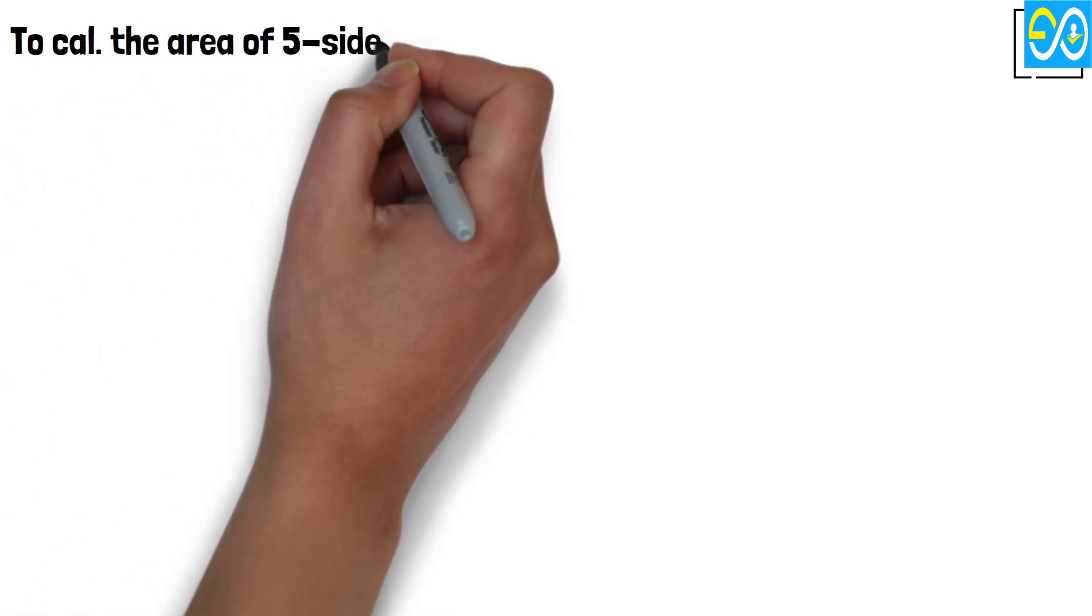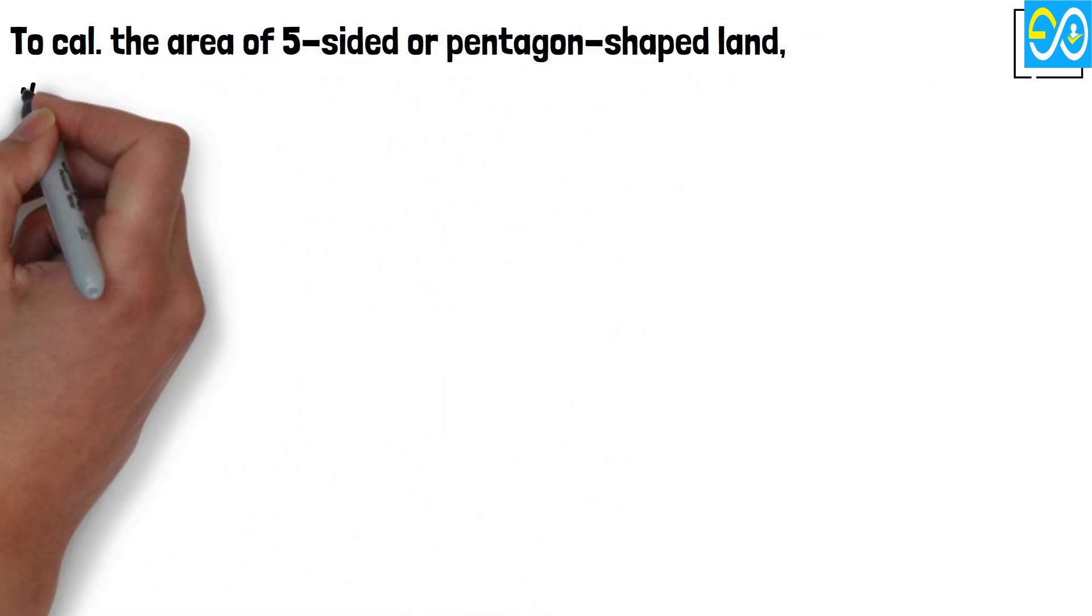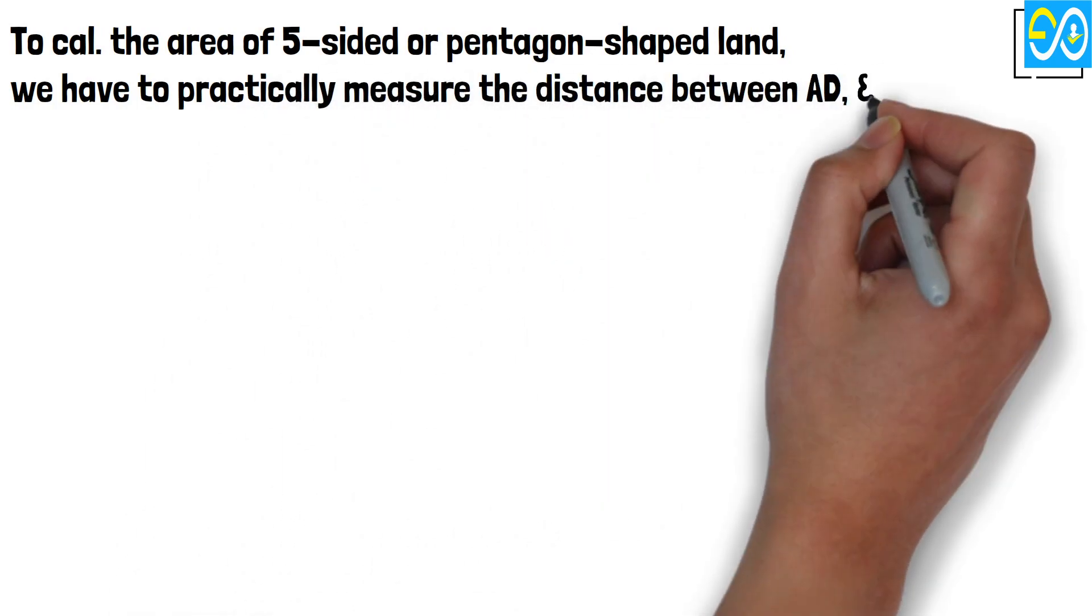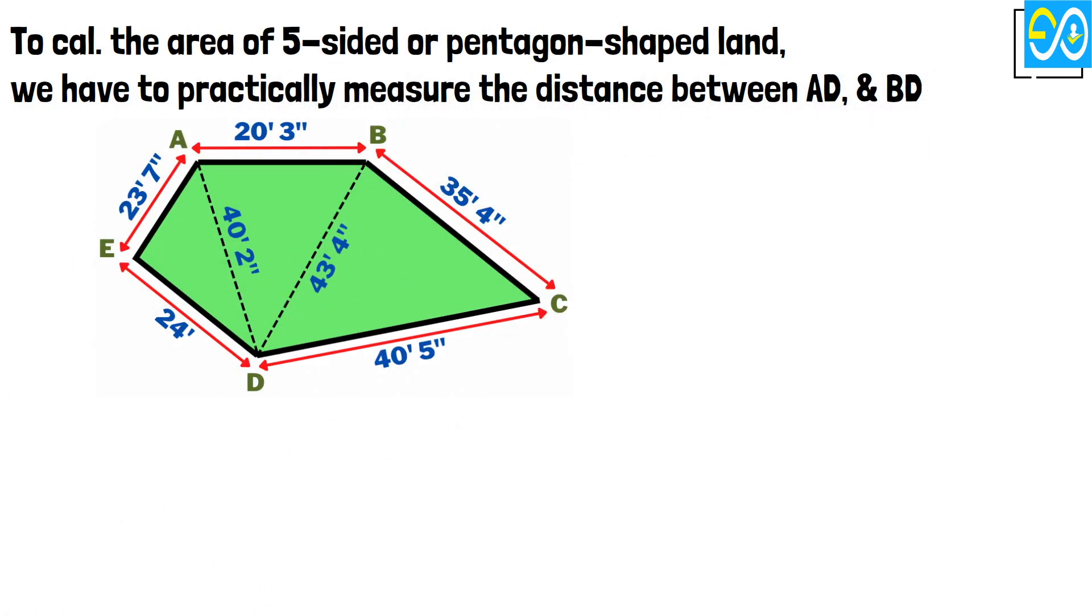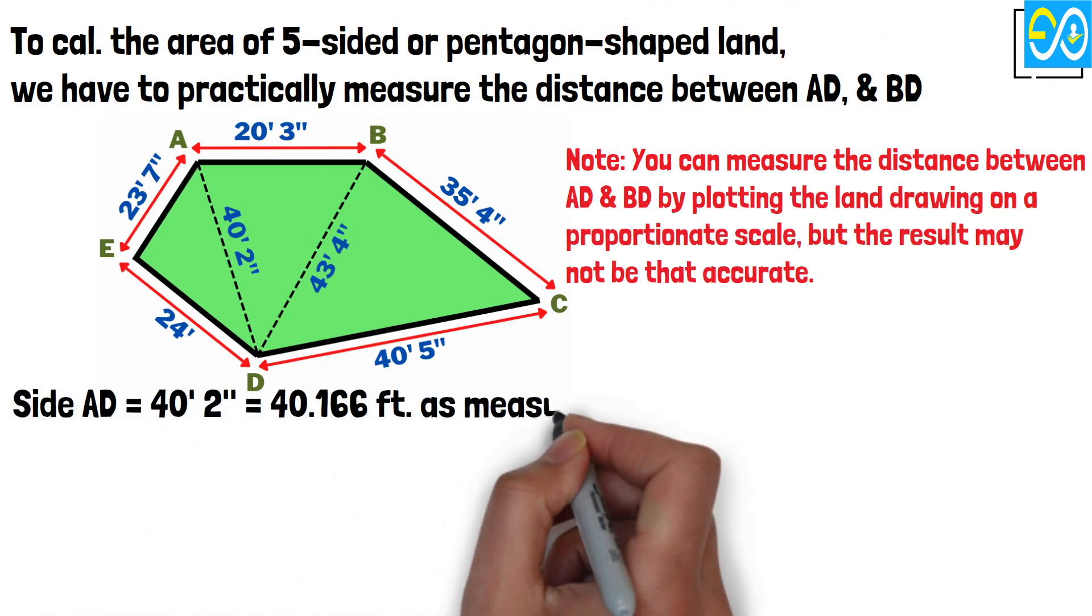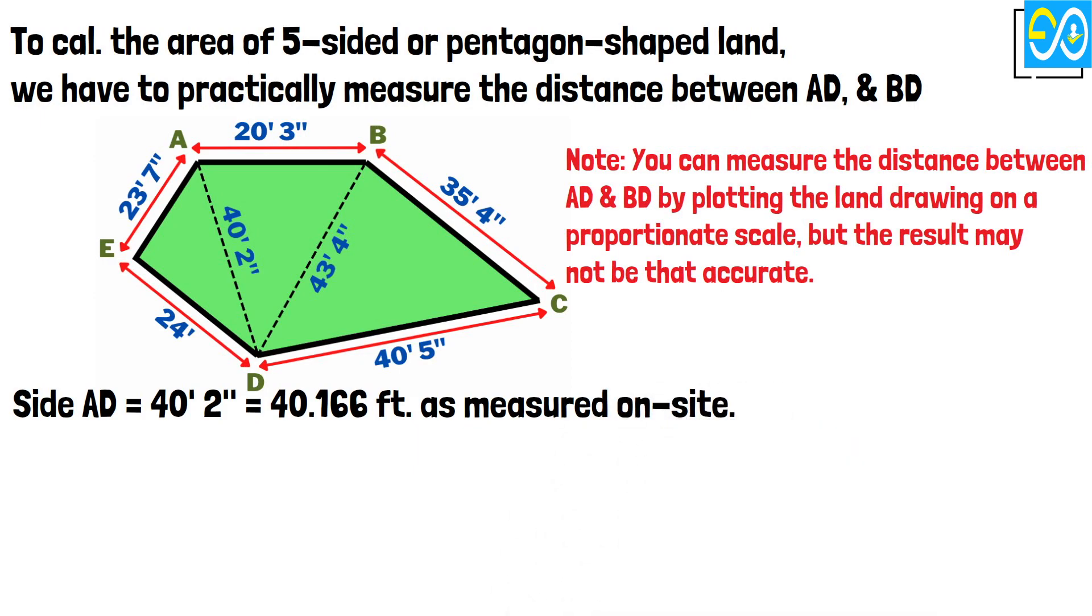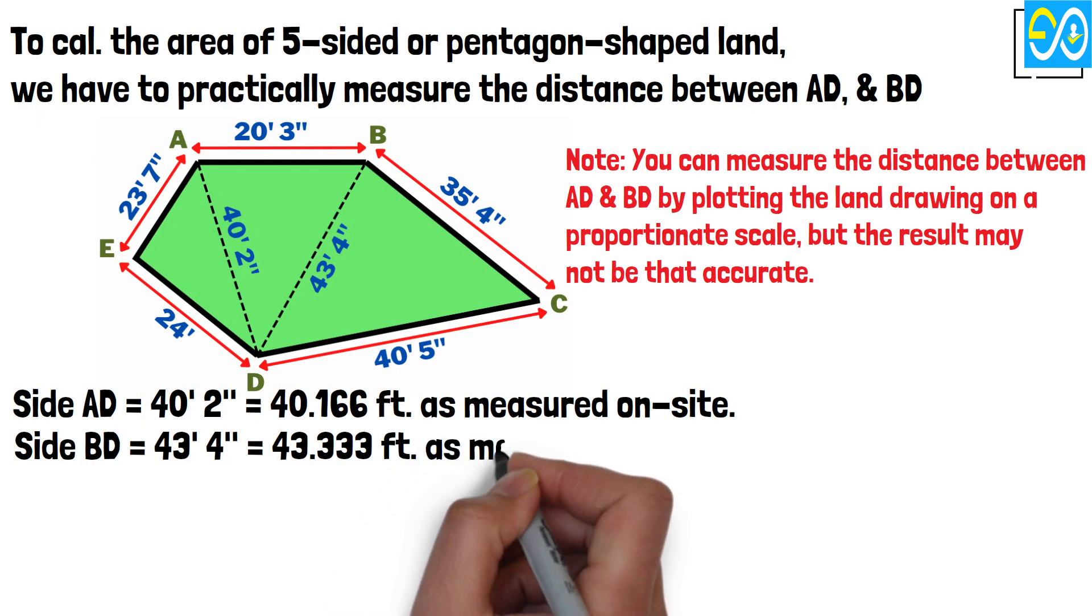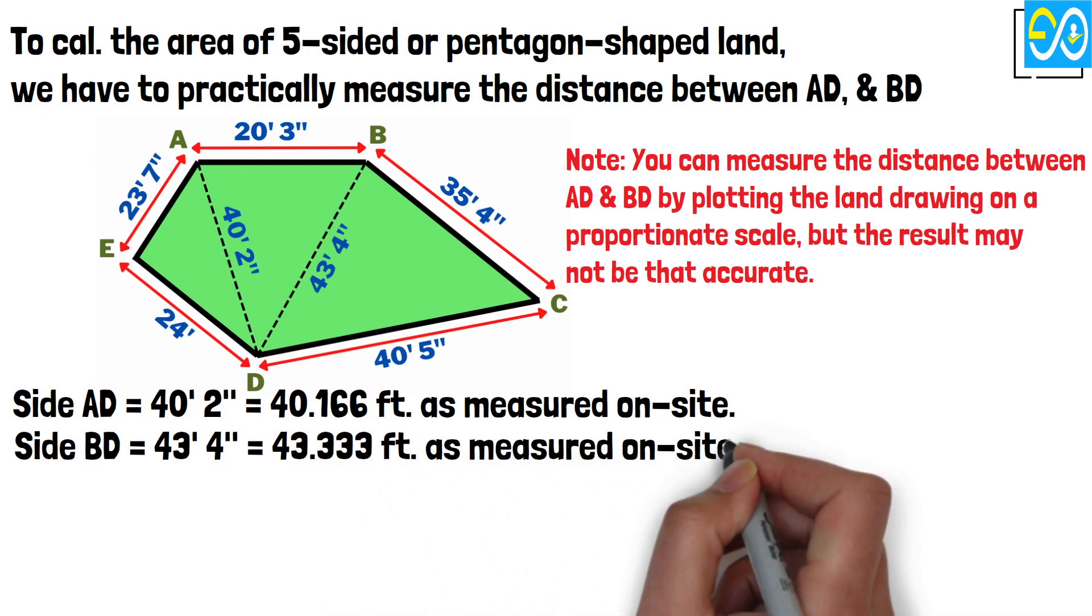To calculate the area of five-sided or pentagon-shaped land, we have to practically measure the distance between AD and BD. Side AD equals 40 feet 2 inches equals 40.166 feet as measured on site. Side BD equals 43 feet 4 inches equals 43.333 feet as measured on site.